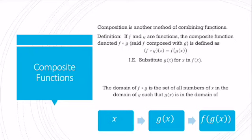Composition is another method of combining functions. If I have two functions, that means we've already checked that they passed the vertical line test — each x has a unique y. The composite function, denoted f open dot g, is read 'f composed with g.' It's not multiplication because that dot is hollow. That is f of g of x, which means we substitute g of x in for x in f. The domain of this function composition is all numbers in the domain of g such that g of x is in the domain of f.